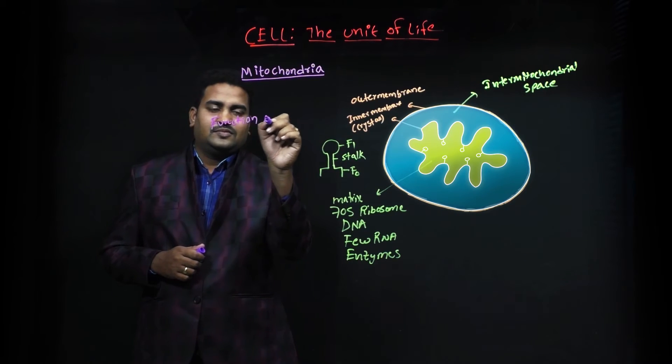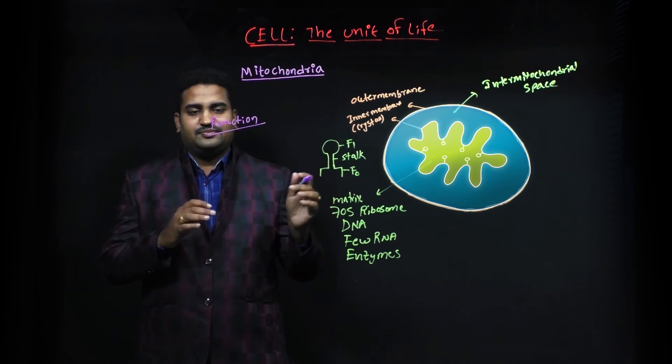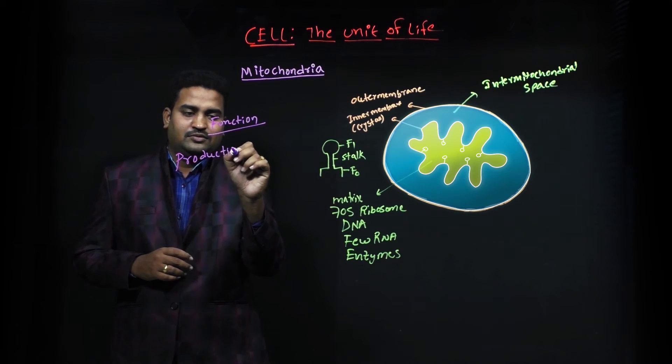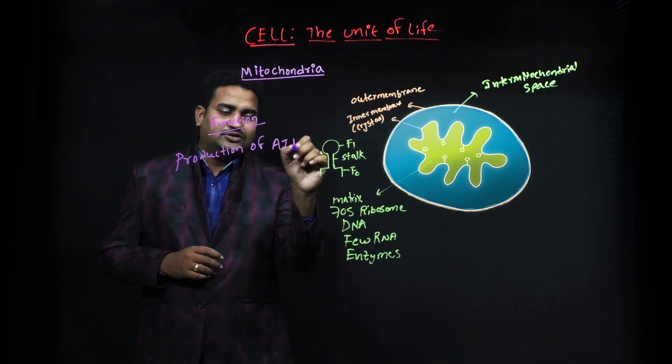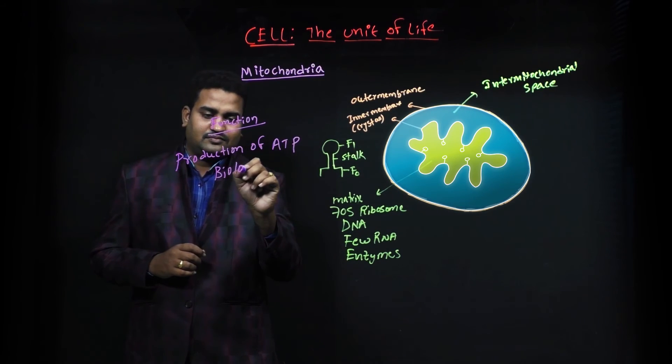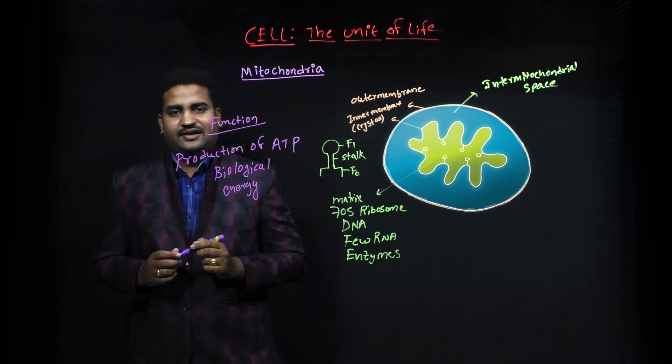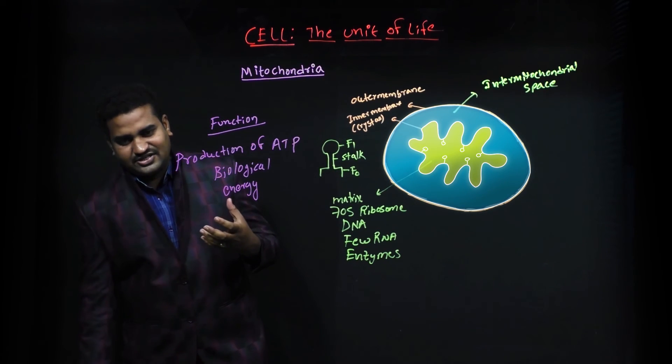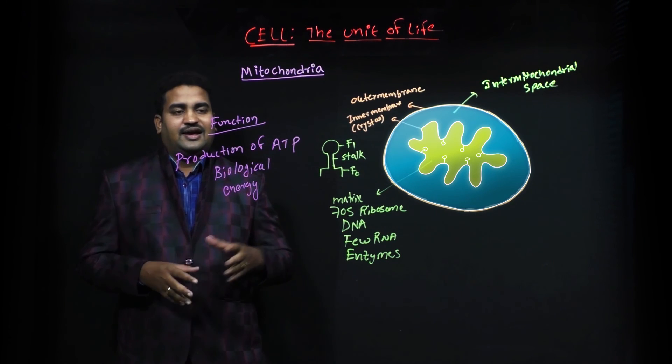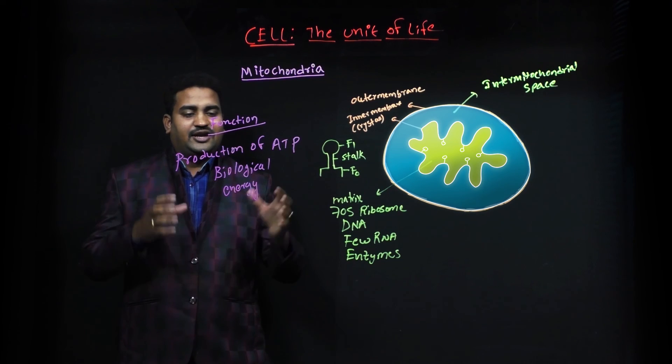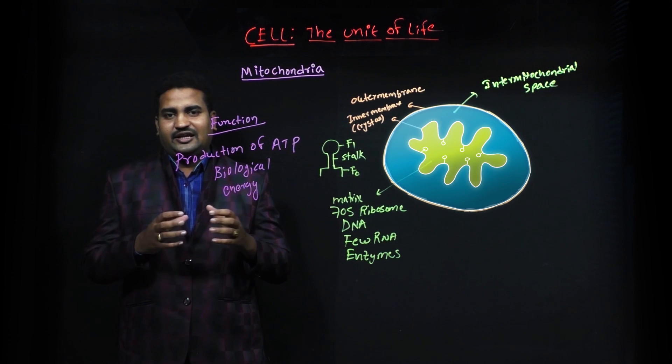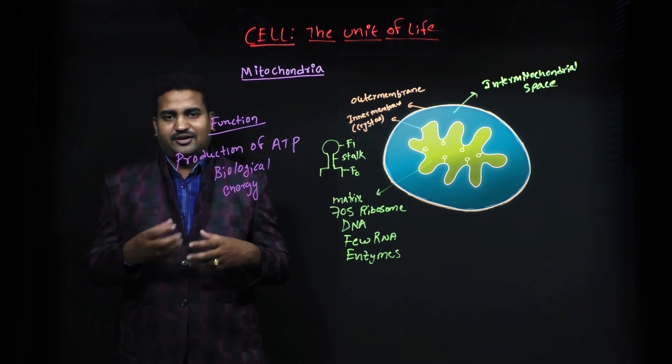The main function of mitochondria is production of ATP. This ATP is the biological energy. Many reactions like Krebs cycle, link reaction, and electron transport chain occur in the mitochondria and finally lead to production of ATP. This ATP is very important for biological metabolism.